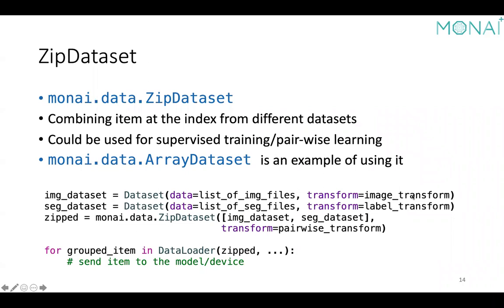The zip dataset is another utility that groups input from multiple datasets. This is useful for supervised training — for example, image and label pairs, or pairwise training such as image registration tasks. Notably, we can apply additional transforms to the grouped inputs, for example to use the same set of random parameters across different sources.